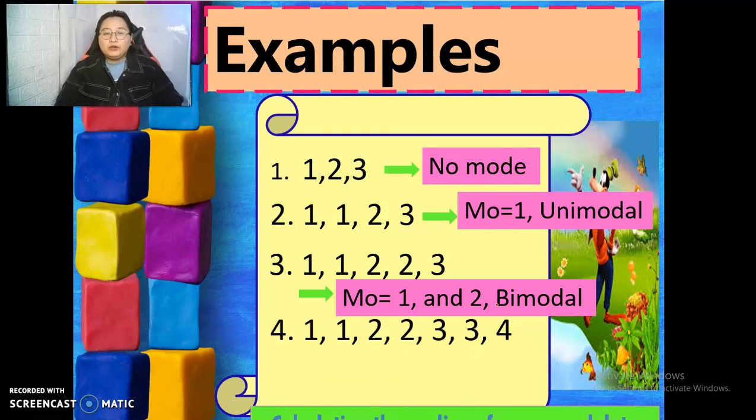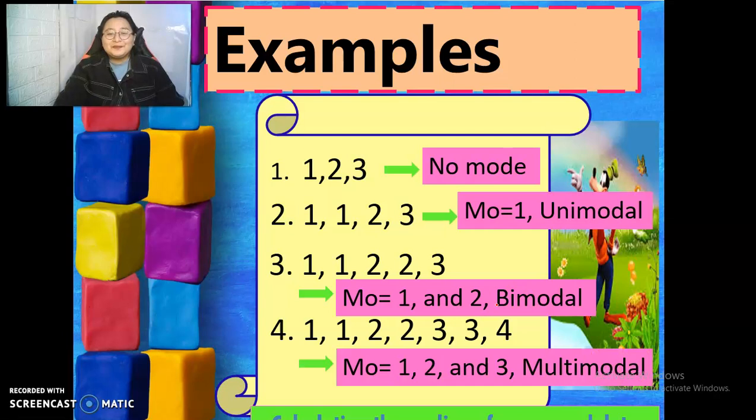How about number four? 1, 1, 2, 2, 3, 3, 4. What are the modes? What is the mode? Yes, the modes are one, two, and three. What do we call this type of mode? Yes, multimodal. Very good.